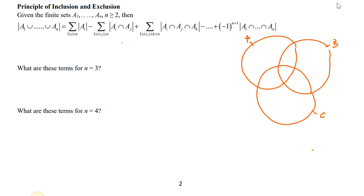In this video we're going to continue discussing the principle of inclusion and exclusion, but this time we're going to see examples where we have more than two sets. So if we have three sets, what would the cardinality of A union B union C equal to — the number of elements in A, B, and C?